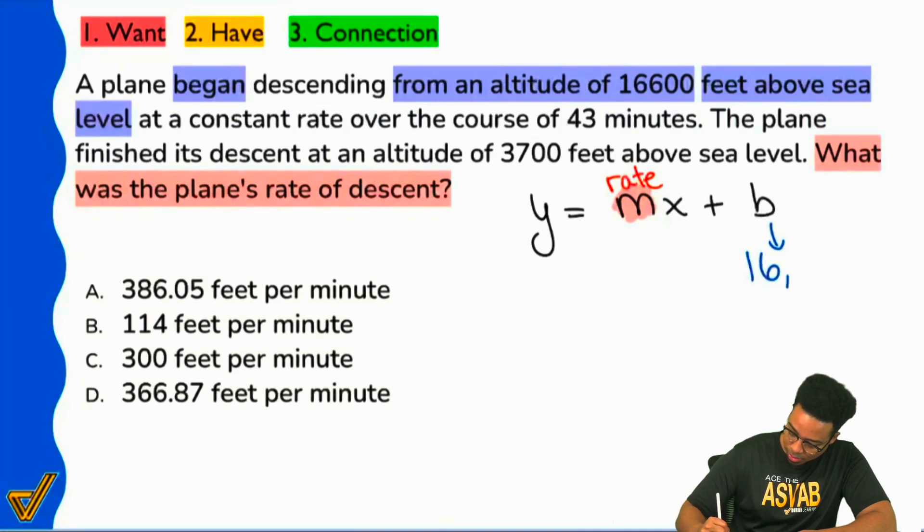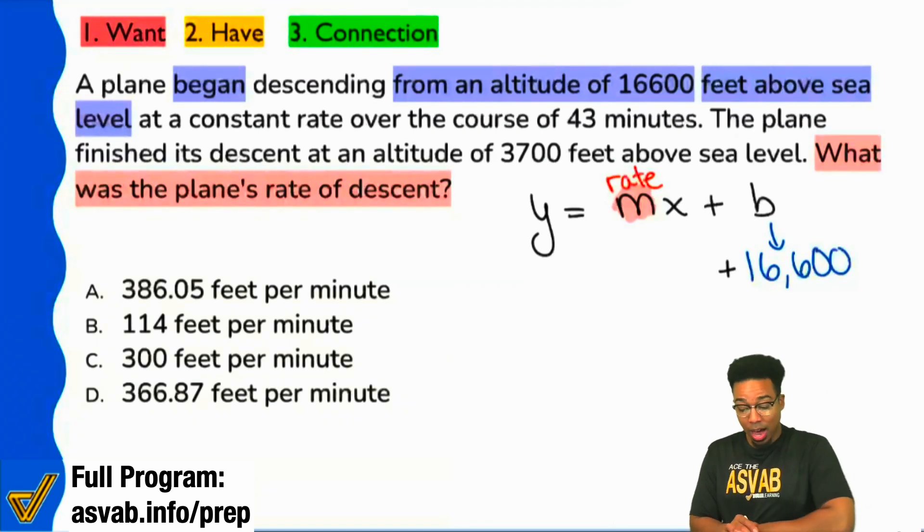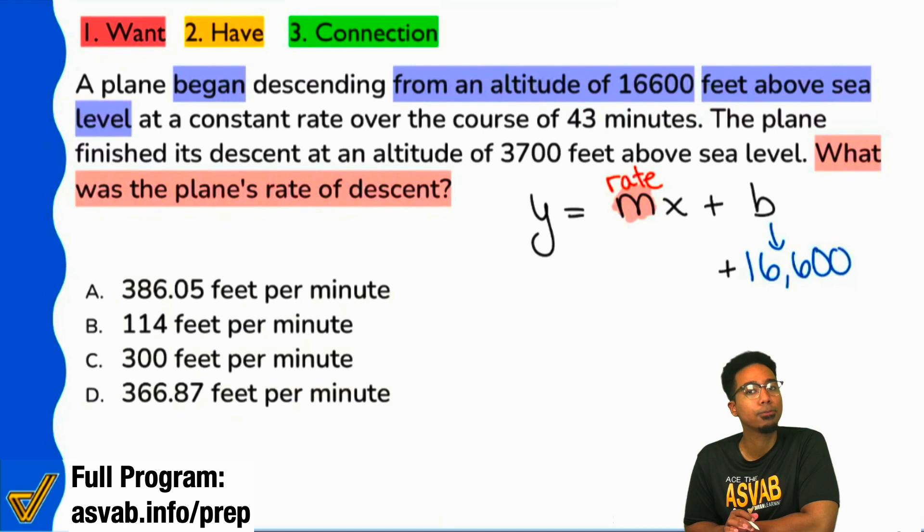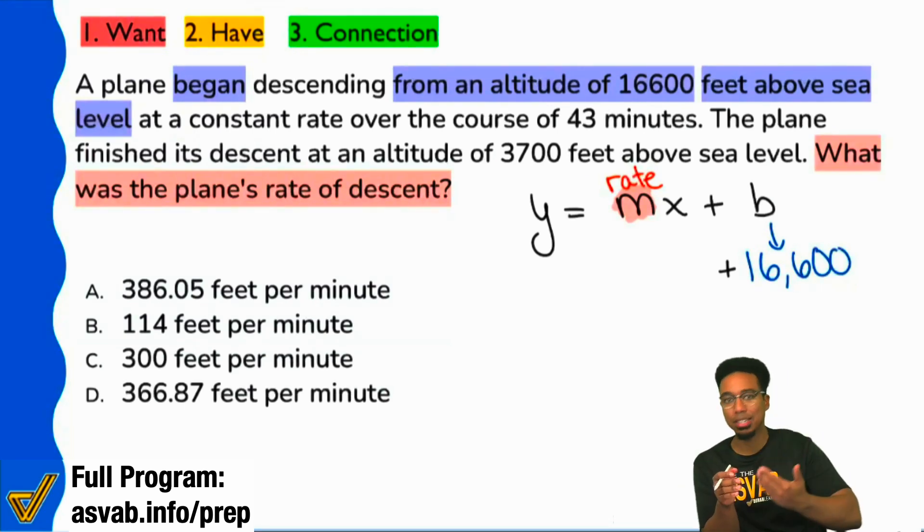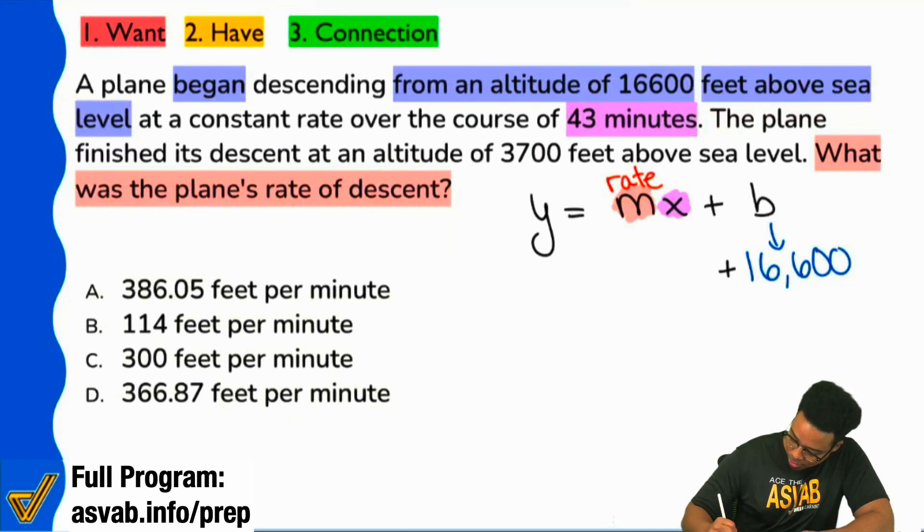That's 16,600 feet above sea level. Use consistent colors here, black. All right, next up. Then it says, at a constant rate over the course of 43 minutes. Everyone, what is the 43 minutes going to represent? Right. Whenever you see time, that's a very good guarantee that you're dealing with X. Typically, everything depends on time. Time doesn't depend on anything else. So that's going to be your X more often than not. So here we go. Let's go ahead and mark that out. I'll use purple here for this one. 43 minutes. And so, that'll be 43 right there.